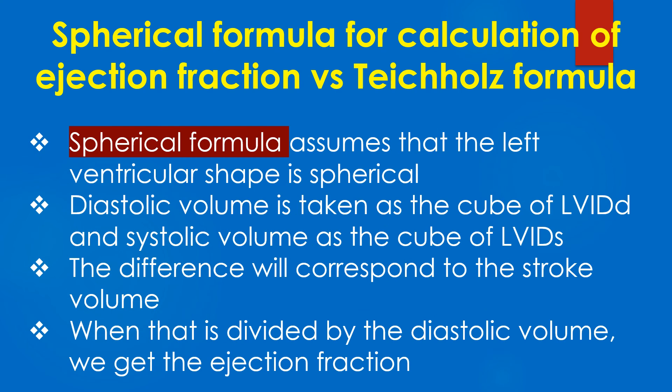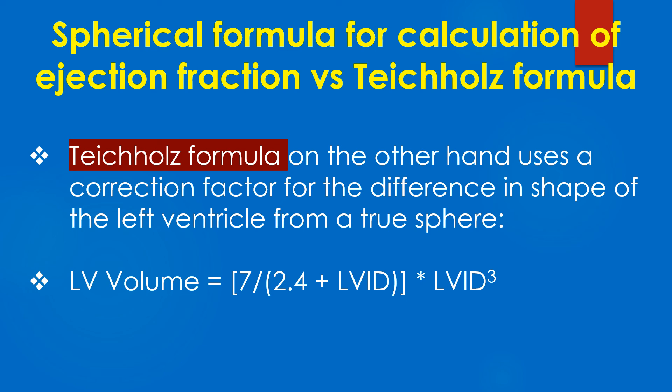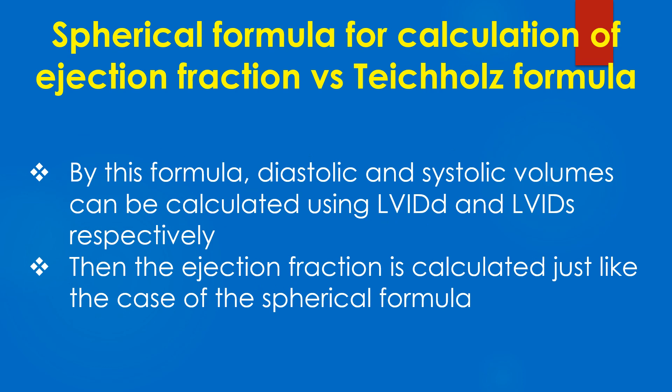The spherical formula assumes that the left ventricular shape is spherical. Diastolic volume is taken as the cube of LV IDD and systolic volume as the cube of LV IDS. The difference corresponds to the stroke volume, and when divided by the diastolic volume we get the ejection fraction. The Teichholz formula uses a correction factor for the difference in shape of the left ventricle from a true sphere: LV volume = (7 ÷ (2.4 + LV ID)) × (LV ID)³. By this formula, diastolic and systolic volumes can be calculated using LV IDD and LV IDS respectively, and the ejection fraction is then calculated as in the spherical formula.